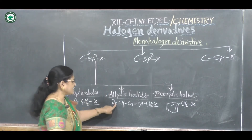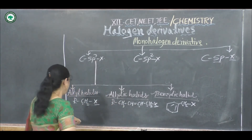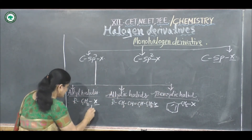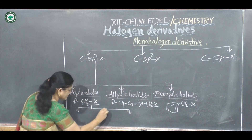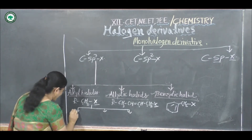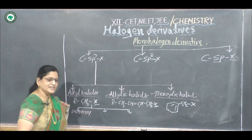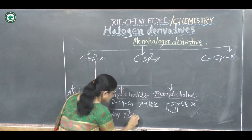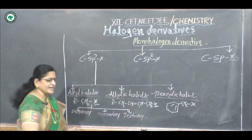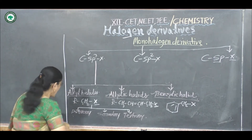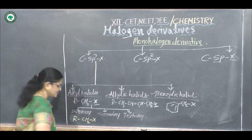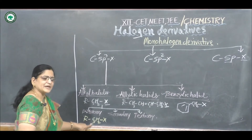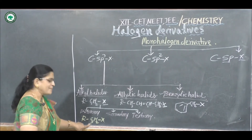Alkyl halides, allylic halides, and benzylic halides are also classified as primary, secondary, and tertiary. In primary alkyl halides, represented as RCH2X, the halogen atom is bonded to a primary carbon atom — a first-degree carbon atom.